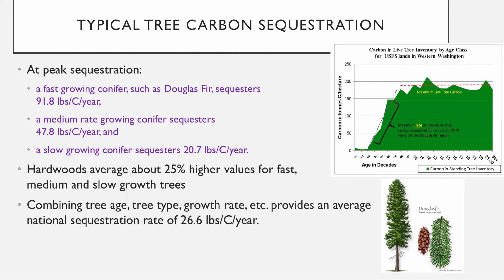In the US, the EPA has looked at all the different tree types, their growth rates, and ages, and has estimated that on average across the country's tree coverage, we can assume about 26.6 pounds of carbon per tree. There's also a link on your handout to a calculator where you can get sequestration rates for different trees or different coverage areas.